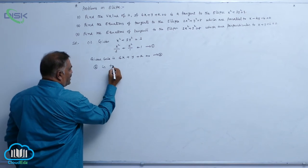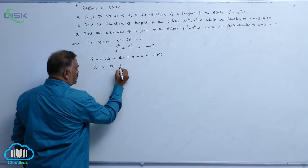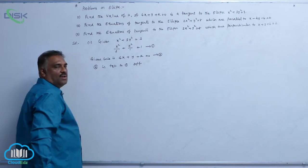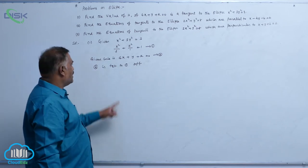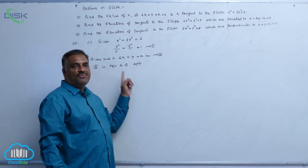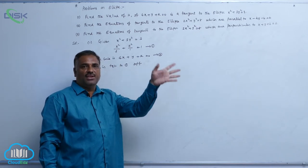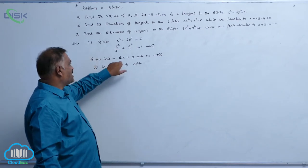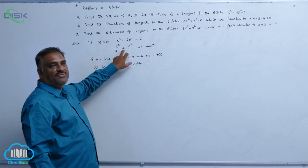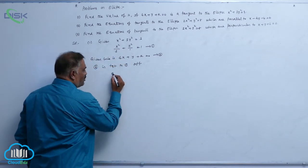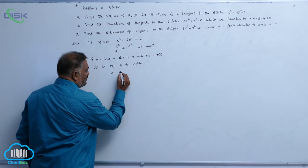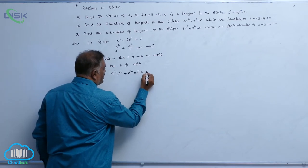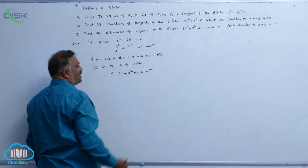Line equation 2 is tangent to ellipse equation 1 if and only if the following condition holds: for a line lx plus my plus n equal to 0 to be tangent to the ellipse, the condition is a squared l squared plus b squared m squared equal to n squared.